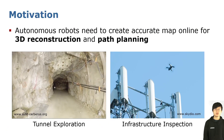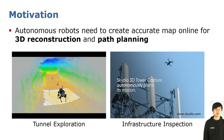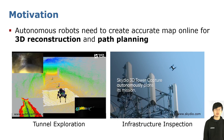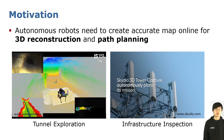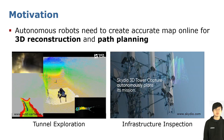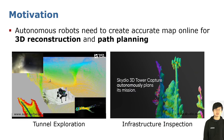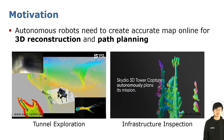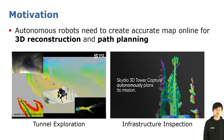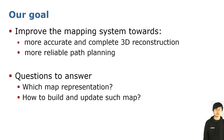Fully autonomous robots need to create accurate maps online for scene reconstruction and path planning. These robots can be used for tasks like tunnel exploration and infrastructure inspection. The goal of this research is to improve the mapping system for better reconstruction and more reliable path planning.